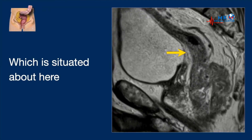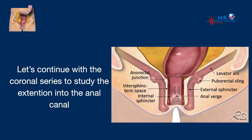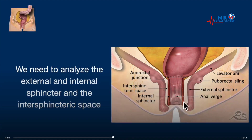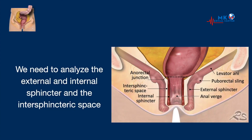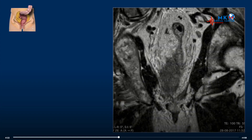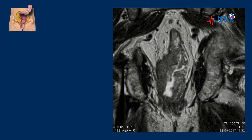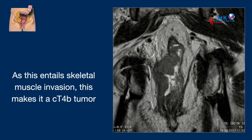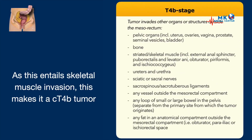Let's go back to our case and continue with the coronal series to study the extension into the anal canal. We need to analyze the external and internal sphincter and the intersphincteric space, which is fatty tissue and bright on the MR images. We start the coronals on the anterior side, so here we have the prostate. Now we see the rectum and the anal canal. On the right side the tumor invades the levator anii and the external sphincter, as we can see here. This means that there is invasion of skeletal muscle.